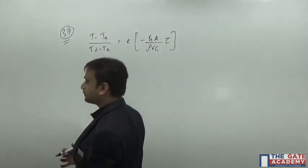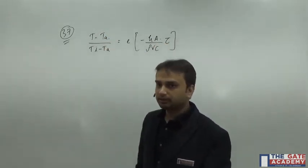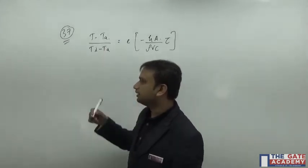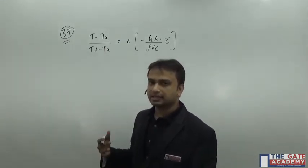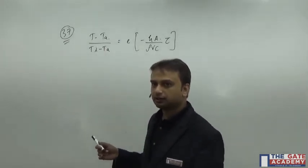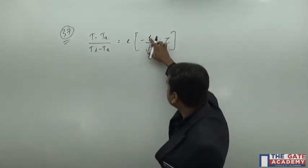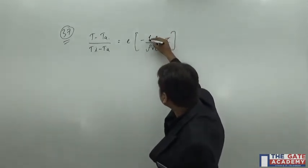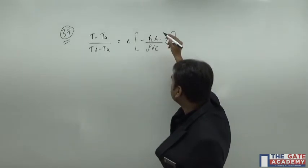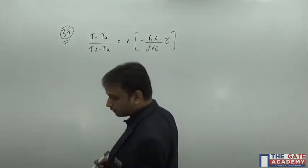What is T? T is the temperature that we need to determine and TA is the ambient temperature, TI is the initial temperature. Exponential of minus H A, everything contains their regular meaning. Now let us put down the values.